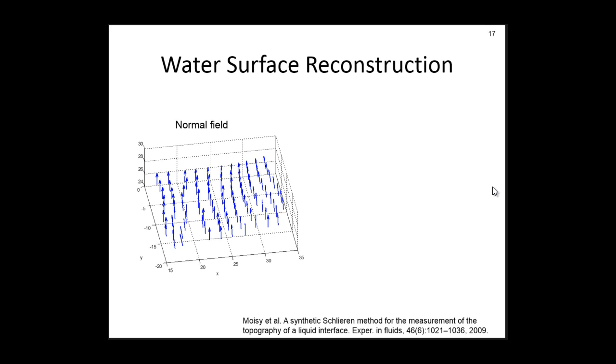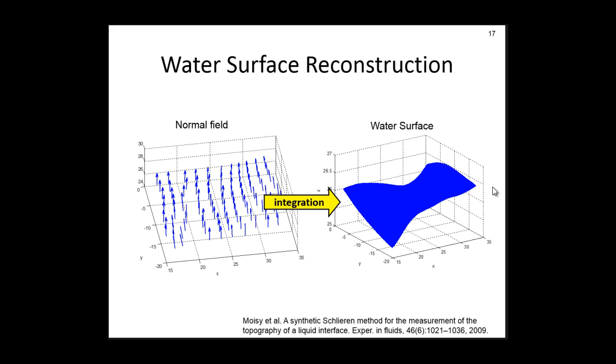And we obtain the normal field seen here. Surface estimation from its sample normals is related to photometric stereo. The water surface is typically smooth and integrable. Thus, we perform numerical integration of the water surface gradient field to obtain the water surface.